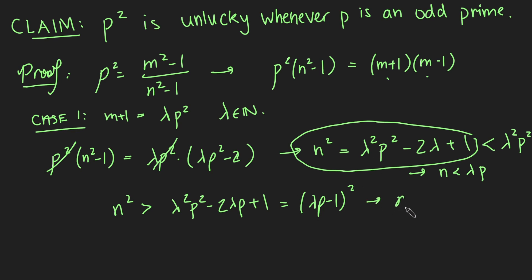And again, we get that n must be bigger than lambda p minus 1 by square rooting both sides. But then we have that n is less than lambda times p, but it's bigger than lambda p minus 1. But lambda p is an integer, and n is supposed to also be an integer. And we get this here, that n is an integer in between two consecutive integers, and that makes no sense whatsoever. This is a contradiction.